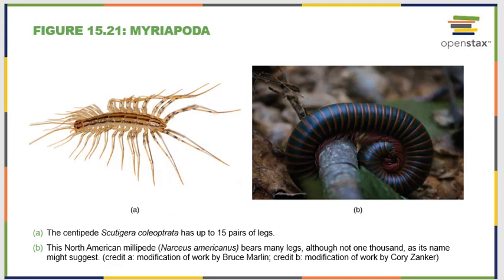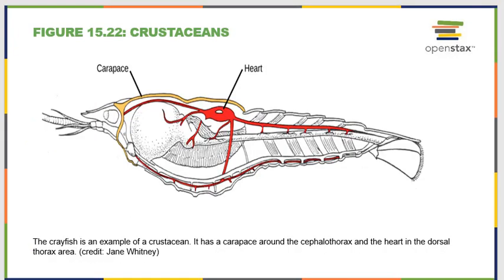Myriapoda is another group of arthropods, including our centipedes and millipedes. They can range anywhere from 10 to 170 legs, and we tell them apart by how many legs per segment they have and what their mouthparts look like. Crustaceans are also well-known arthropods — a crayfish, lobster, or crab are excellent examples. Crustaceans stand out because their carapace also includes calcium, giving them a tougher body. That's why crabs are much harder to crunch than typical bugs.